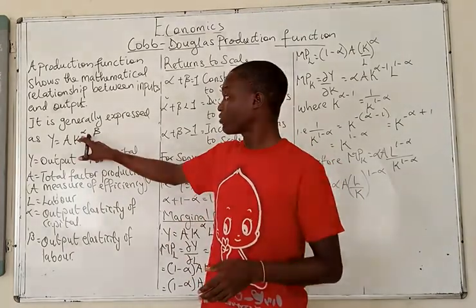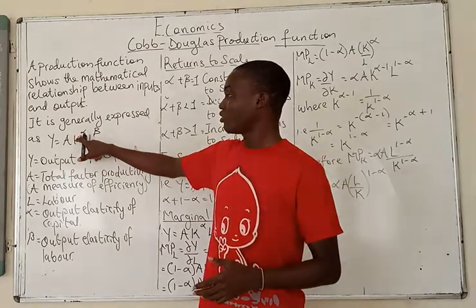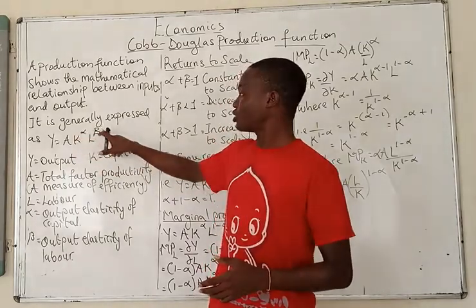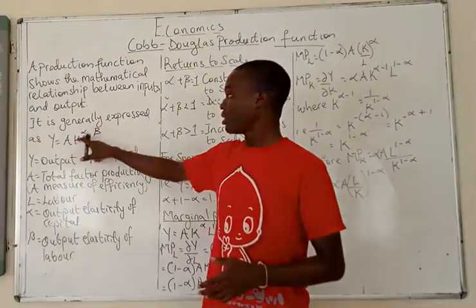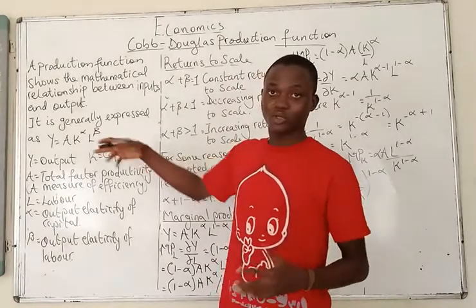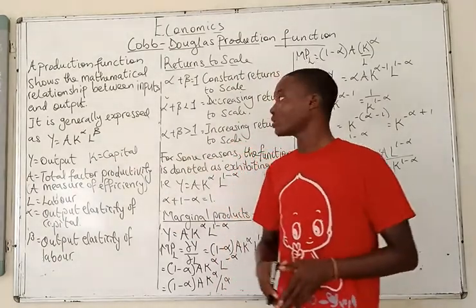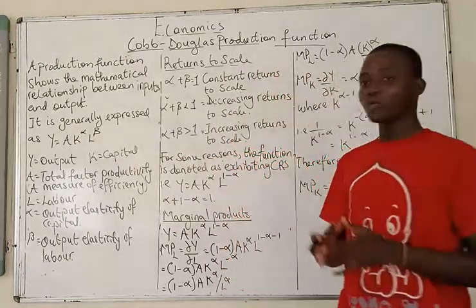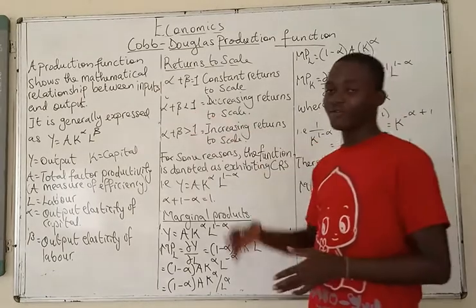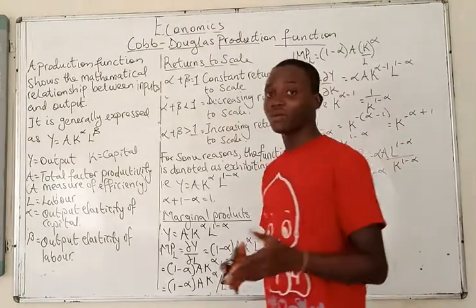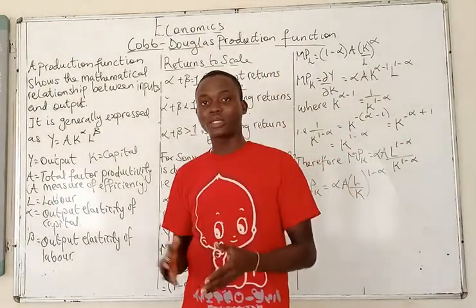So alpha plus beta equals 1 — for example, 0.5 plus 0.5, or 0.45 plus 0.55, or 0.3 plus 0.7 — as long as it gives us 1. Now the second case is where alpha plus beta is less than 1. When alpha plus beta is less than 1, there is decreasing returns to scale.